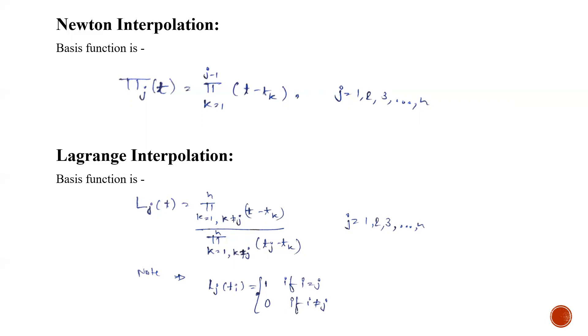One important thing to note here is that the basis functions for Lagrangian interpolation are 0 if i is not equals to j and 1 only if i equals j. This is a beautiful property of Lagrangian functions.